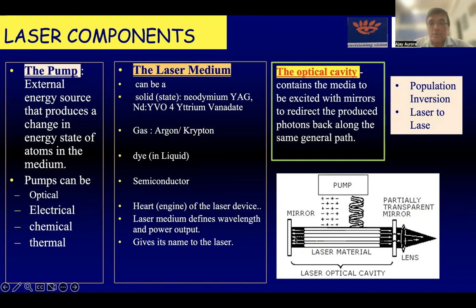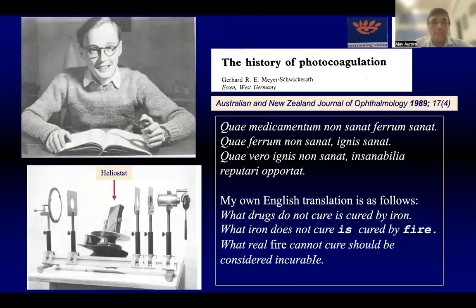When these electrons hit a mirror that is fully reflective on one side, on the other side there is a small opening which allows the laser beam to exit the cavity, and then the laser is activated and released from the system.